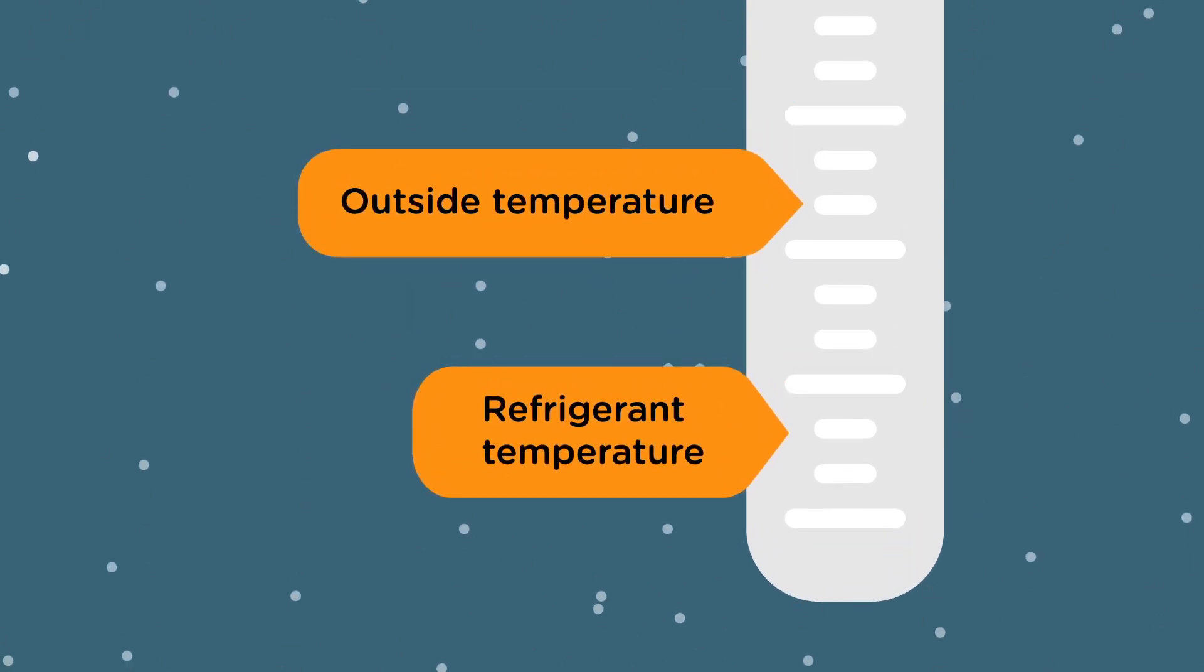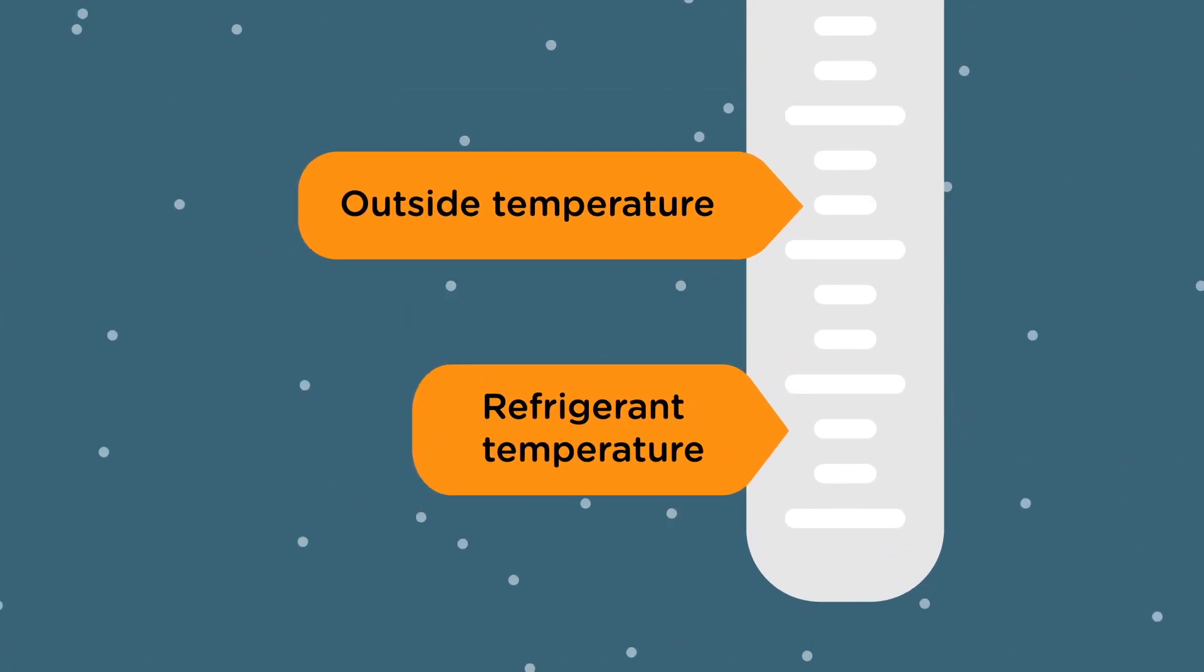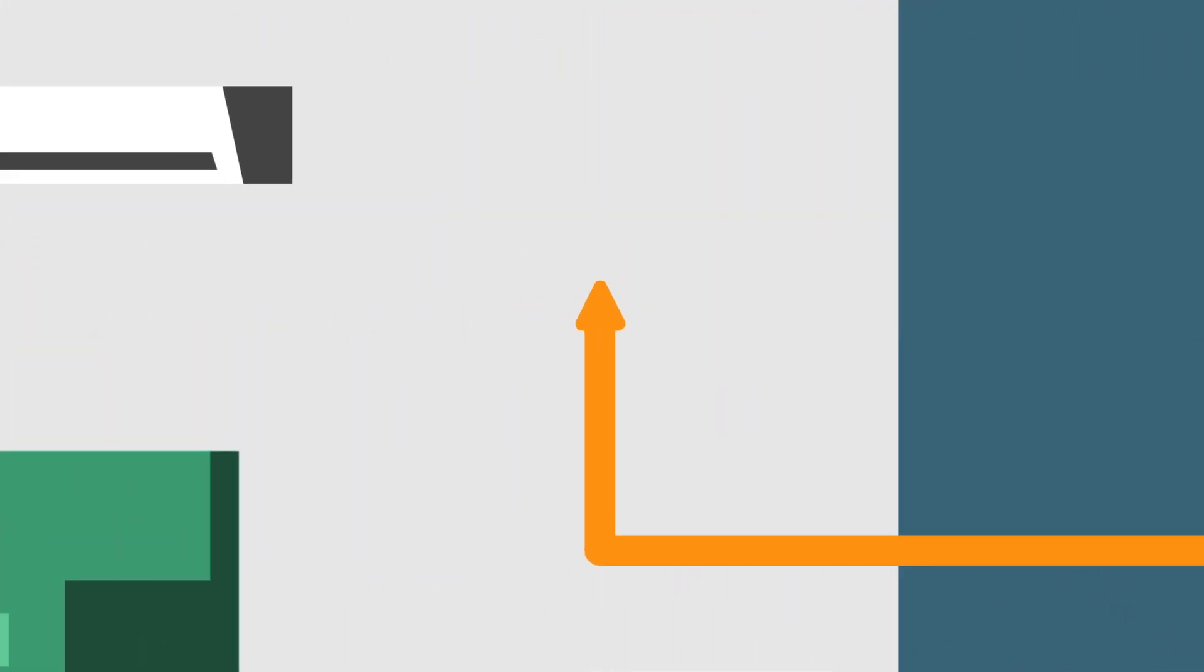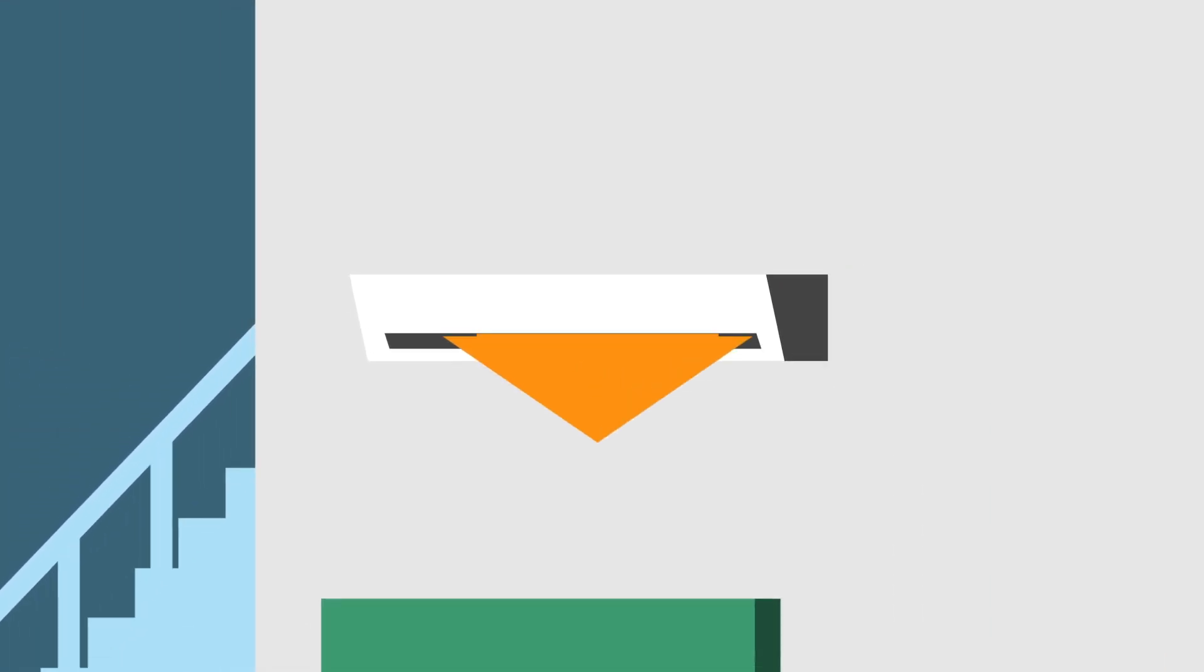In winter, the evaporator operates at very low temperatures so that the refrigerant is colder than the outside air and can still absorb heat. The heated refrigerant is then brought inside and released by the indoor coil to heat the house.